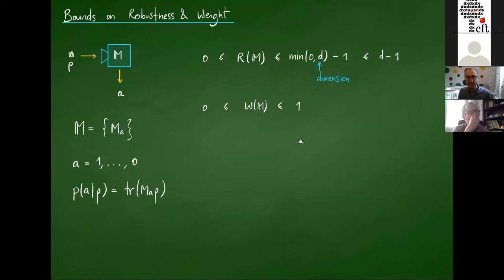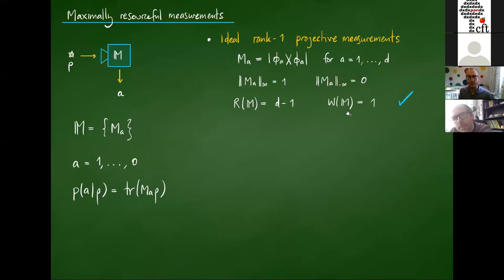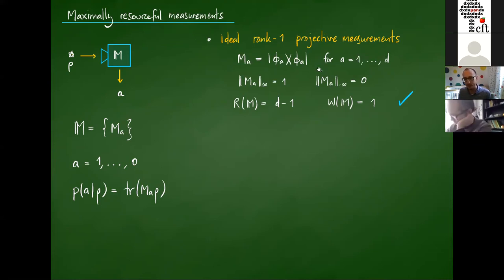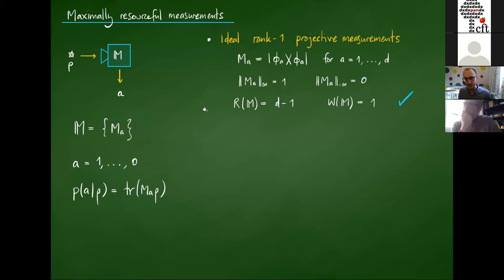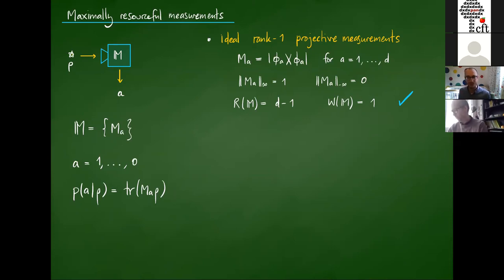A natural question: what are the most informative measurements according to these quantifiers? Let's check the ideal measurement: a rank-one projective measurement, where each POVM element is just a one-dimensional projector. Each has eigenvalue one and eigenvalue zero. The robustness is the sum of the largest eigenvalues, so one plus R equals D, giving robustness equal to D minus one — it's maximal. The weight equals one because all smallest eigenvalues are zero. By both definitions, this is a maximally informative measurement.